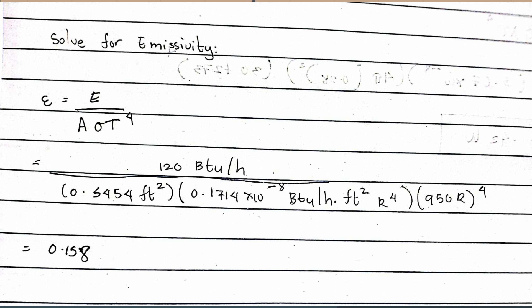Equals 120 BTU per hour over 0.5454 feet squared times 0.1714 times 10 raised to negative 8 BTU per hour feet squared R to the 4, times 950°R raised to 4. So we have the emissivity. This equals 0.58.